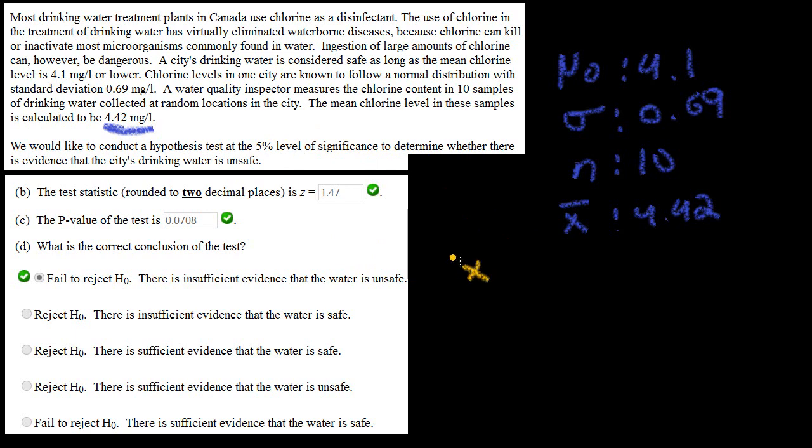We're going to be needing the x bar, subtract the null hypothesis, divided by the standard deviation of the sample. This can be calculated by doing the standard deviation of the population divided by the square root of n. n is the sample size. This is the standard deviation of the population. This is the sample's mean. This is the mean of the population or the thing that's being tested. All of this will give you a z-score or a z-value that we can actually use to answer the question.